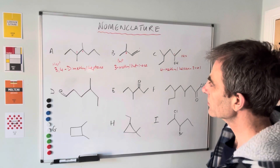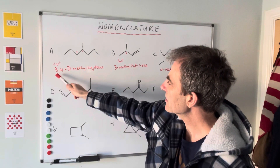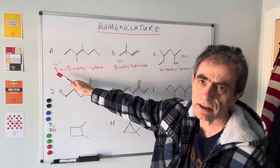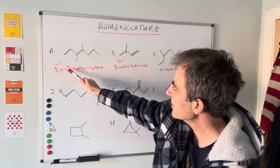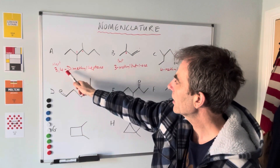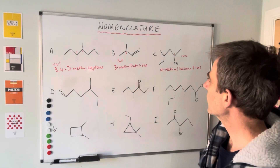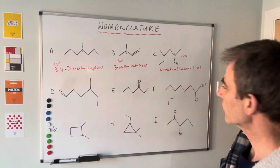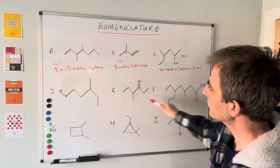Just to make a point about punctuation in names: if you've got two numbers you separate those with commas, and if you've got numbers and words they're separated with hyphens. So the first one is 3,4-dimethylheptane, then 3-methylbut-1-ene, and 4-methylhexan-2-ol.